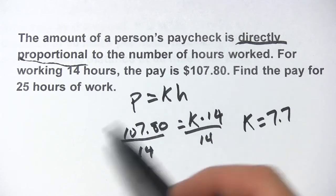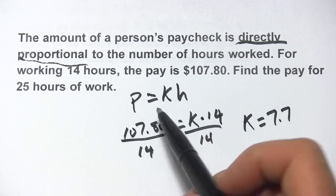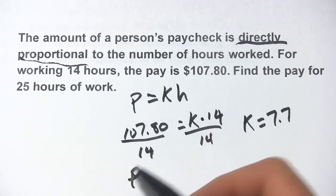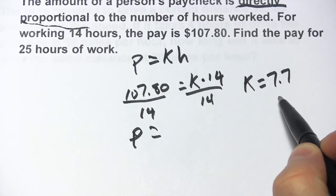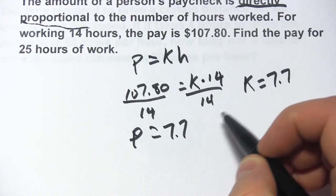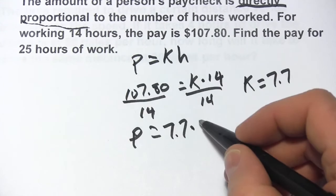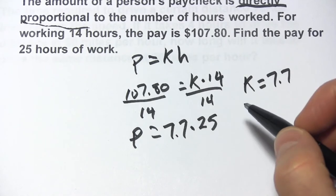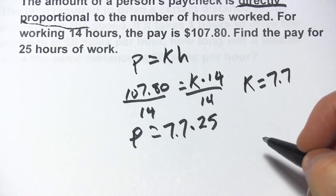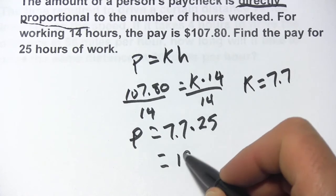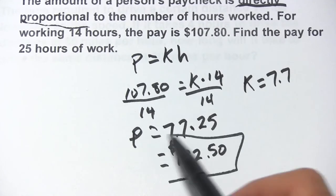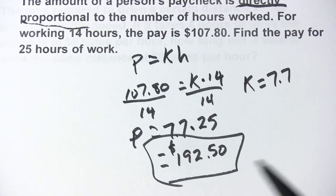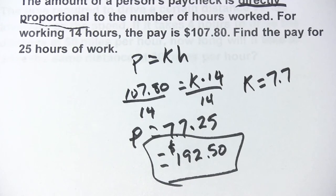Then it says find the pay for 25 hours of work. So we'll just use this formula — we want to find the pay. We have the constant of variation now, that's 7.7, times the 25 hours of work. So 7.7 times 25 looks like that is $192.50. So that is the pay for 25 hours of work — not a very high wage. And that's a little bit of work with direct variation.